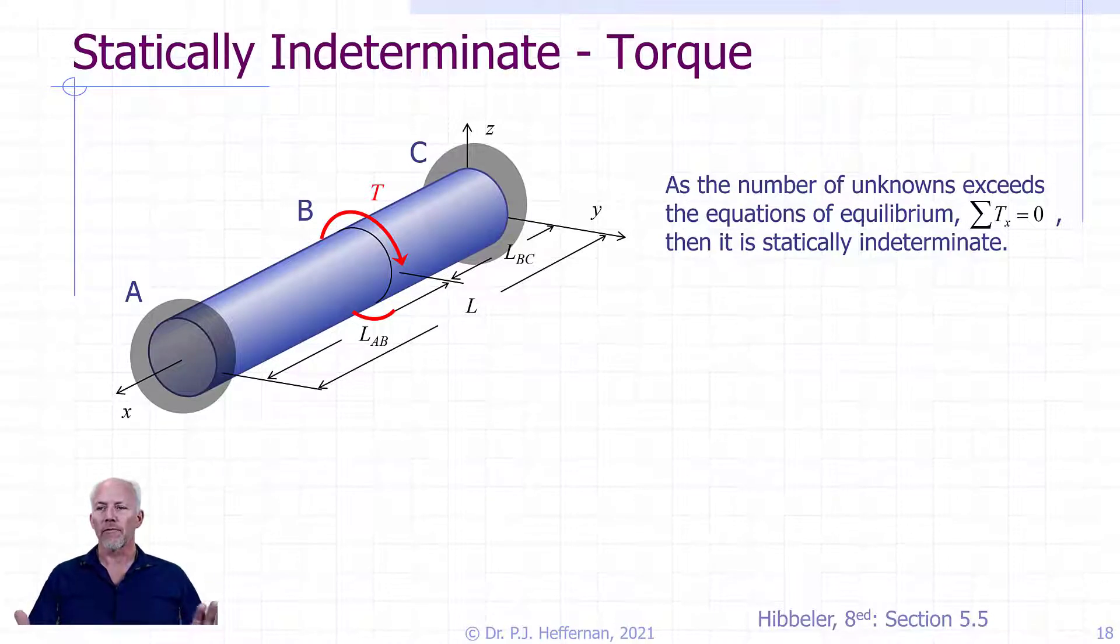So it is not free to twist at either A or C. The torque applied in the middle is going to twist the cross section at B, but it is going to have to return to a zero angle of twist at both A and C.